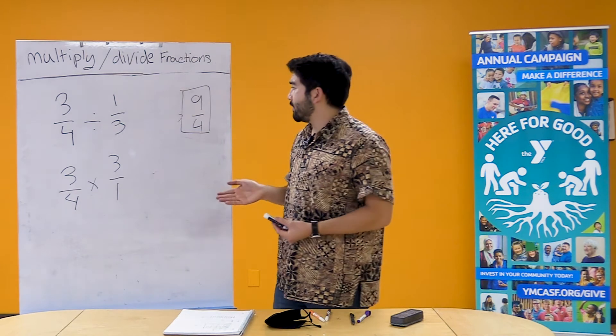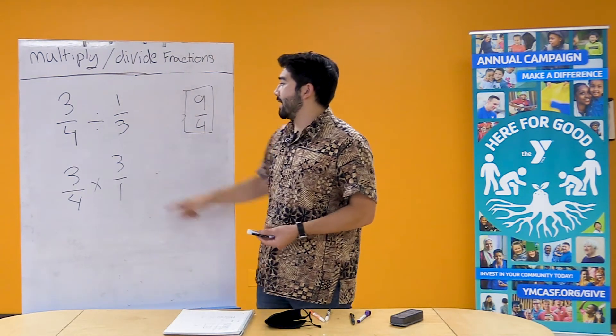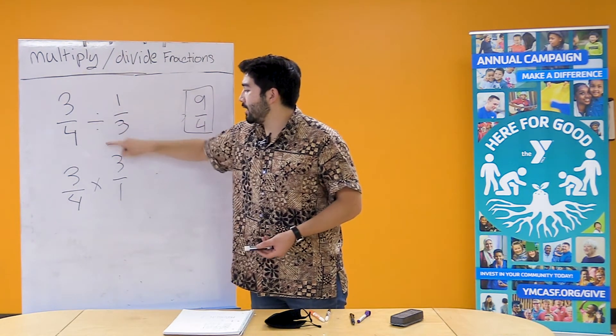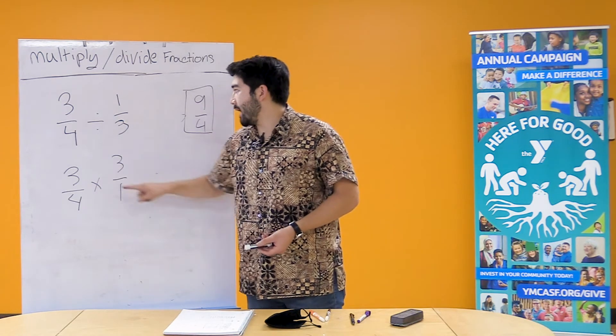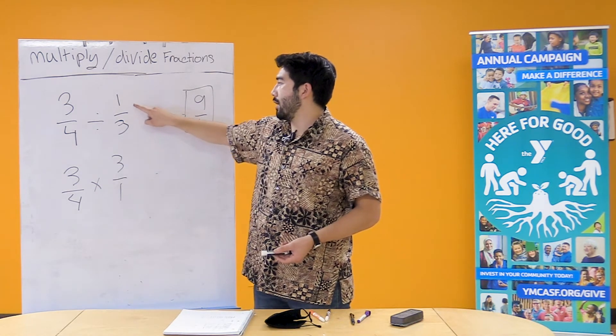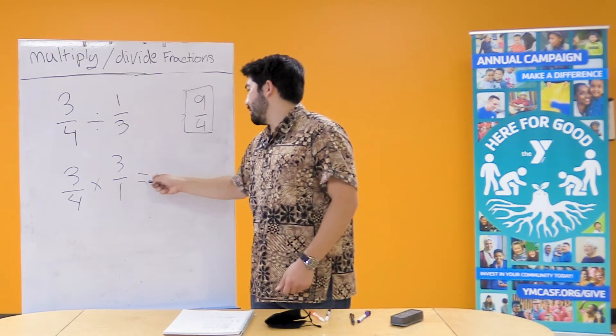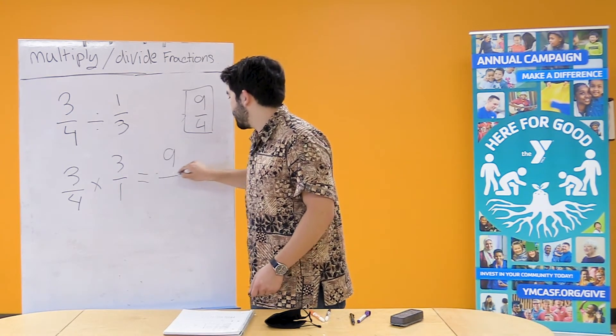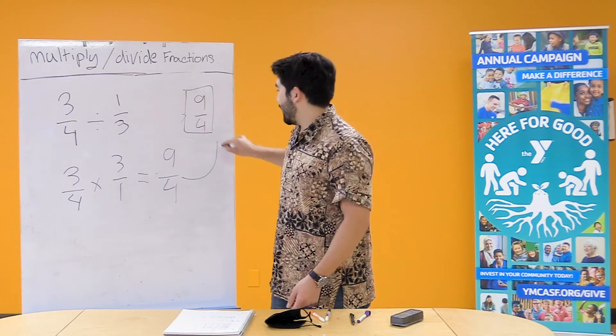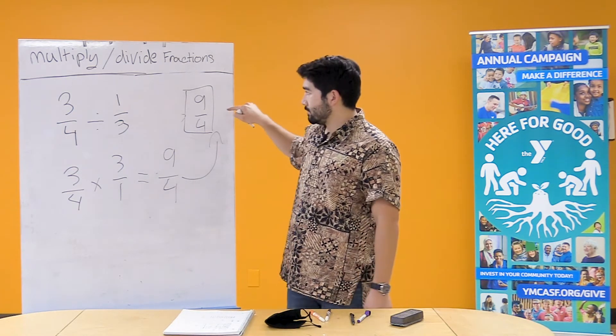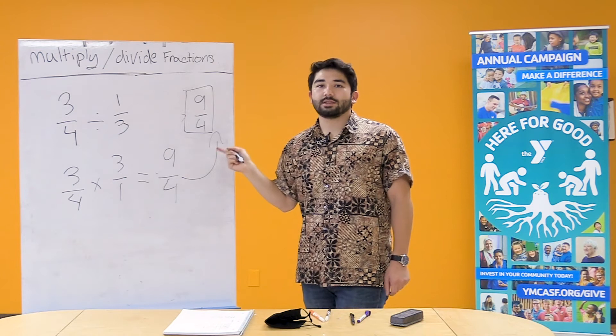So I know that might be very confusing, but essentially what I did is I turned this division sign into a multiplication sign, and I flipped our 1/3 to 3/1. And that's gonna give us 9/4. The same as our answer with our diagram.